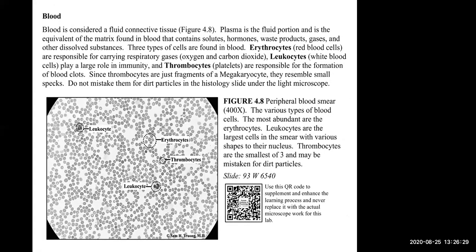Blood is a fluid type of connective tissue. Blood contains many different types of cells. Erythrocytes are your red blood cells — the majority of what you see in this picture, appearing as small darker circles. Anything that's not a red blood cell is a leukocyte, or white blood cell, which is part of the immune response. This is a blood smear — you take a blood sample, put it under a microscope, and this is what you would see.